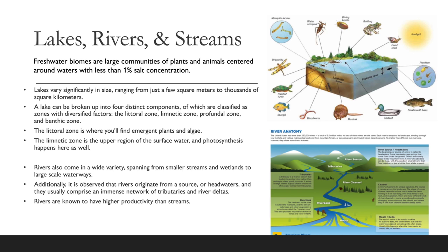Freshwater biomes are large communities of plants and animals centered around waters with less than 1% salt concentration. Lakes vary significantly in size, ranging from just a few square meters to thousands of square kilometers. A lake can be broken up into four distinct components, classified as zones with diversified factors.